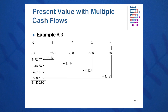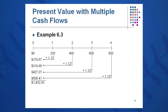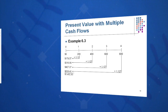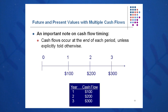You get approximately $1,432 by discounting those cash flows back to today. Notice that in a world with no discounting you'd have $200 plus $400 plus $600 plus $800, or $2,000. But with this severe discounting at a 12% rate, you have $1,432 today — again pointing out that a dollar today is not worth a dollar sometime in the future.